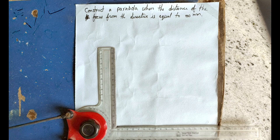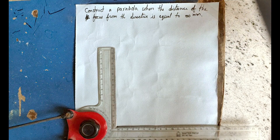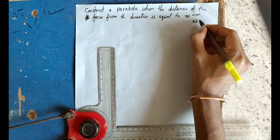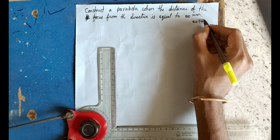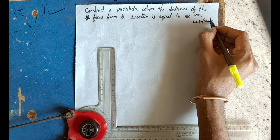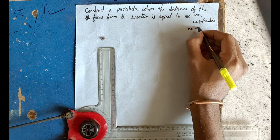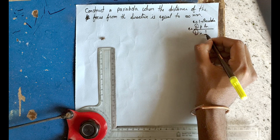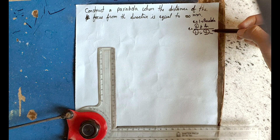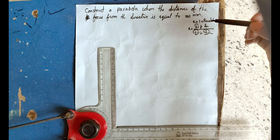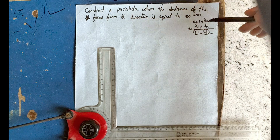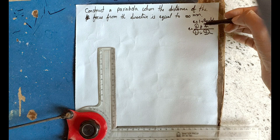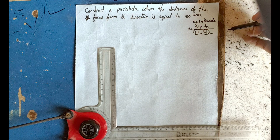For a parabola, eccentricity is equal to 1. Eccentricity is defined as the distance from the focus divided by the distance from the directrix. Since eccentricity equals 1, the distance from the focus equals the distance from the directrix.